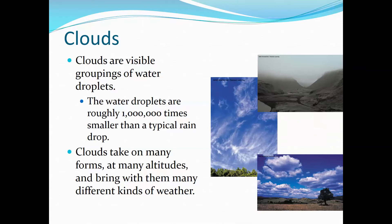Clouds form in many different forms, many different types at many different altitudes, and they bring forth many different types of weather. I'm sure you've seen many different types of clouds. Some look nice and puffy, like cumulus clouds. Others look very wispy and feathery, like cirrus clouds. And others hang out right near the ground, like stratus clouds, which we see a lot of here in the Bay Area.